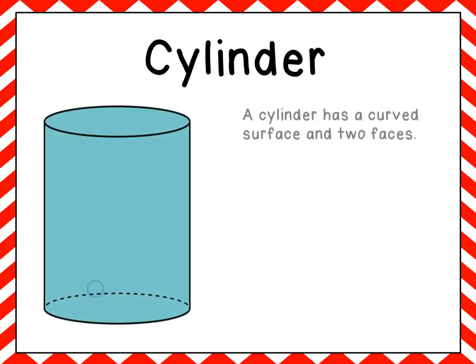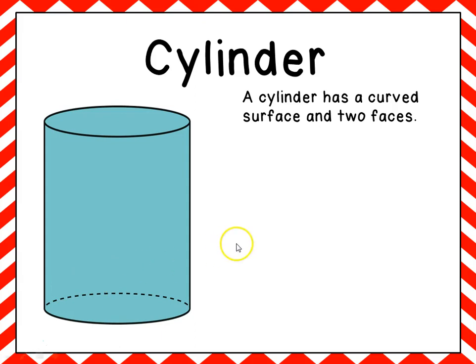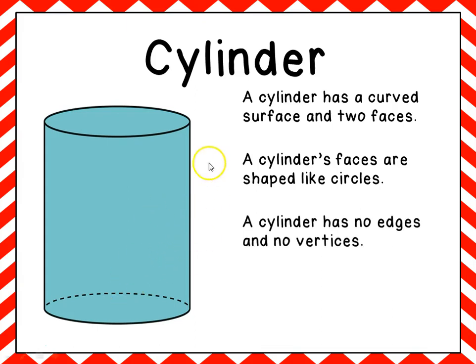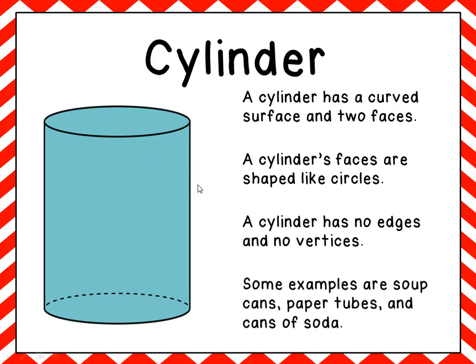Next we have a cylinder. A cylinder has a curved surface and two faces — one on each end — shaped like circles. Because it has a curved surface and circular faces, it has no edges and no vertices. Some examples of a cylinder are soup cans, paper tubes like those in a roll of paper towels, and cans of soda.